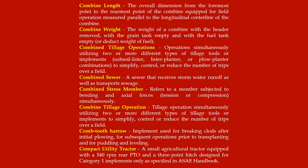Combine tillage operation: tillage operation simultaneously utilizing two or more different types of tillage tools or implements to simplify control or reduce the number of trips over a field. Comb tooth harrow: implement used for breaking clods after initial plowing, for subsequent operations prior to transplanting, and for puddling and leveling. Compact utility tractor: a small agricultural tractor equipped with a 540 RPM rear PTO and a three-point hitch designed for category one implements only as specified in the ASAE handbook.